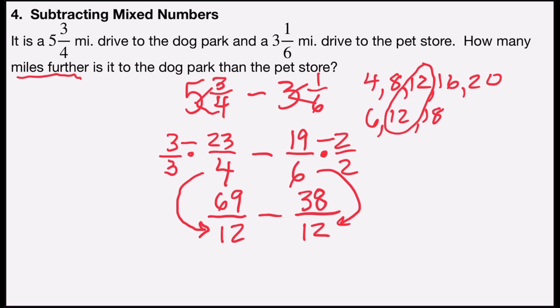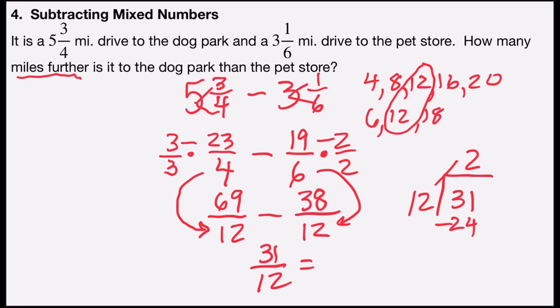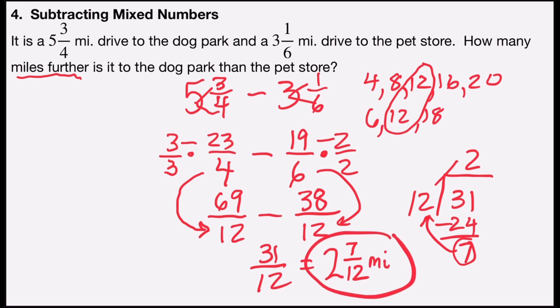Now that my denominators are alike, all I have to do is subtract the numerators. Sixty-nine minus thirty-eight is thirty-one over twelve. Subtract the numerators, keep the same denominator. Now I can rename that back into mixed number form. Twelve divides into thirty-one two full times — two times twelve is twenty-four — and I have a remainder of seven over twelve. So thirty-one over twelve is two and seven-twelfths. That means it's two and seven-twelfths miles further to the dog park than to the pet store.